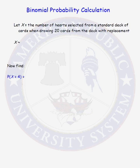In this problem we will do several binomial probability calculations. Our random variable X is the number of hearts selected from a standard deck of cards when drawing 20 cards from the deck with replacement.